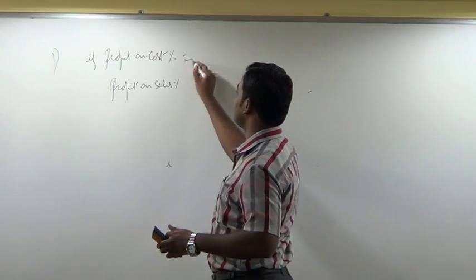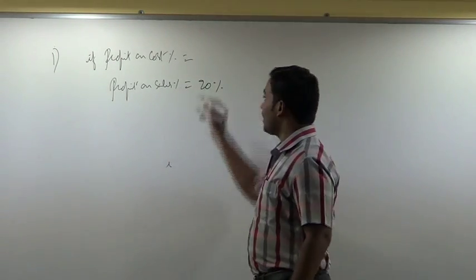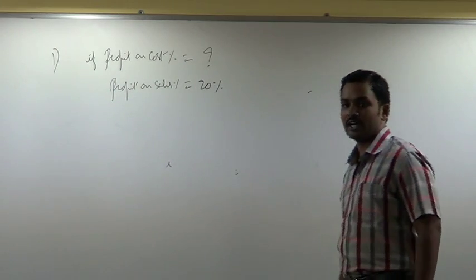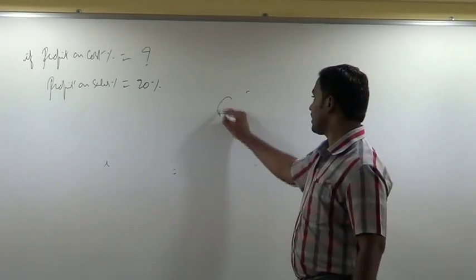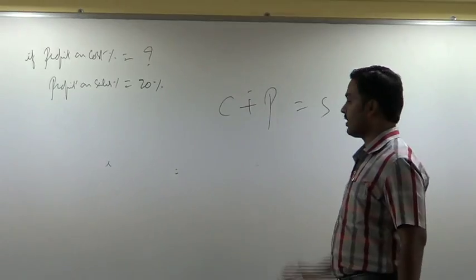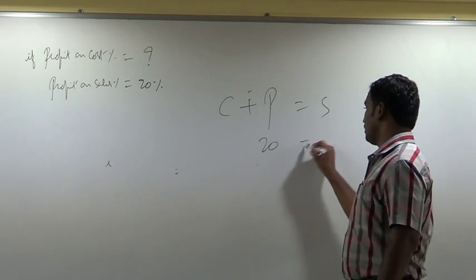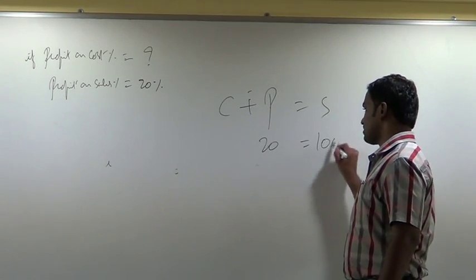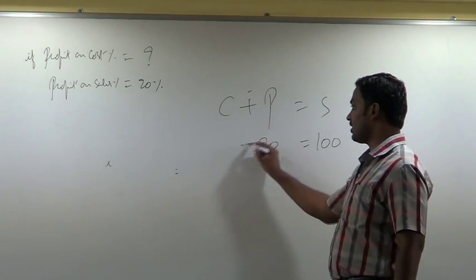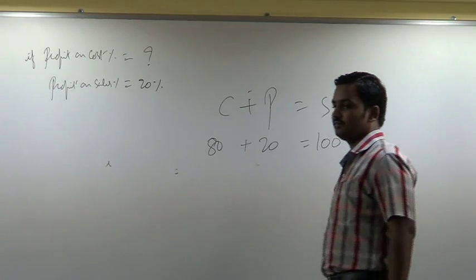Profit on cost percentage is not given. Using C plus P equals S: profit on sales percentage is 20%, meaning profit is 20% on sales. So when sales is 100, profit is 20 and cost is 80.